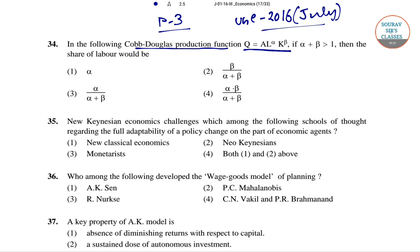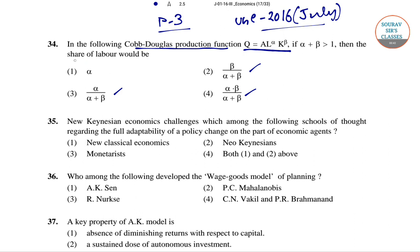If alpha plus beta is greater than 1, then the share of labor would be what? Four options are given: alpha; alpha divided by alpha plus beta; beta divided by alpha plus beta; and alpha into beta divided by alpha plus beta. We have to find the share of labor in the case of the Cobb-Douglas production function.